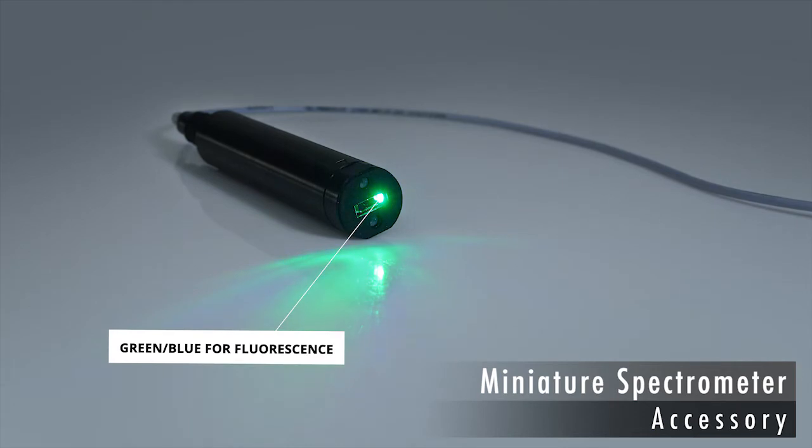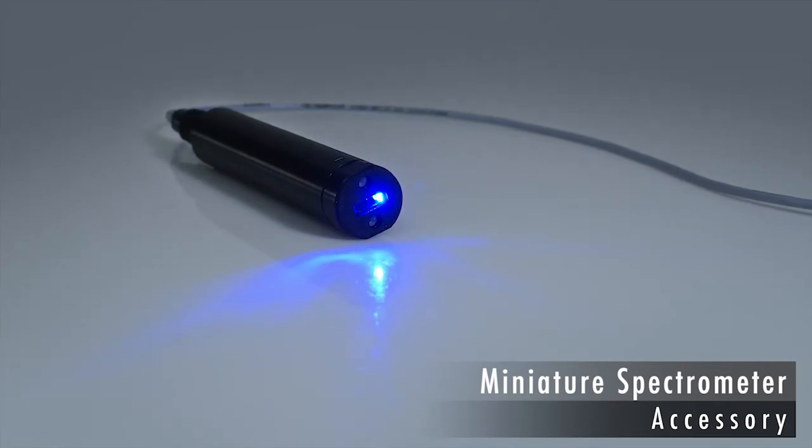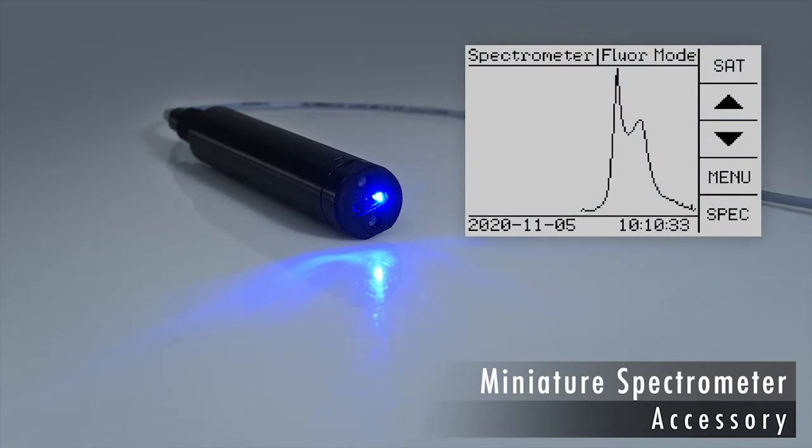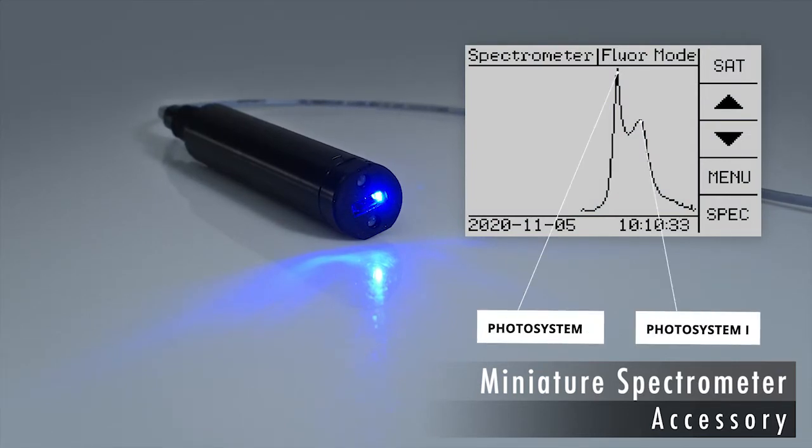A green or a blue light source is used for fluorescence emission spectra. The peaks in fluorescence emission spectra can be assigned to photosystem 1 and photosystem 2.